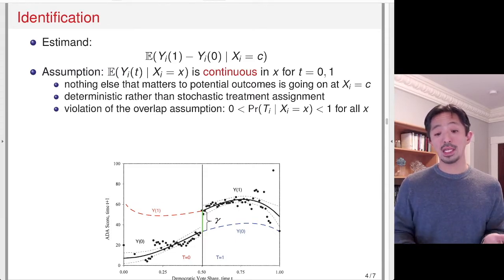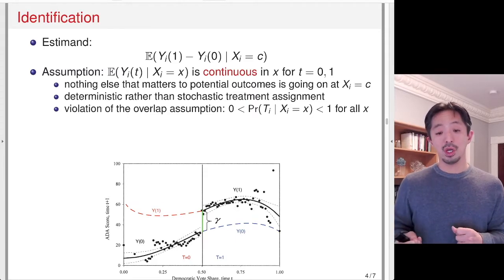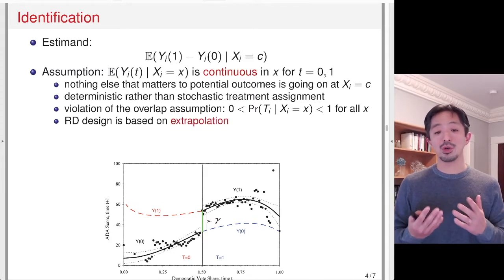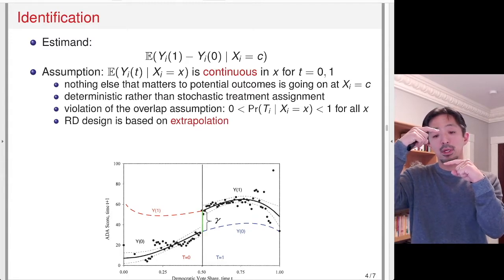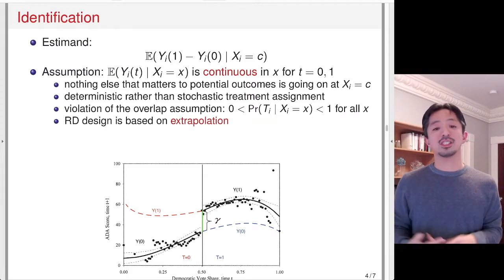But in the case of RD design, the treatment assignment is deterministic, not probabilistic. What that means is that everybody on the right is going to be treated, so Y(0) is not observed at all for observations on the right side of the threshold. Similarly, Y(1) is not observed for all observations on the left side of the threshold. So RD design is really based on extrapolation, and the estimate at the threshold is just a tiny bit of extrapolation.